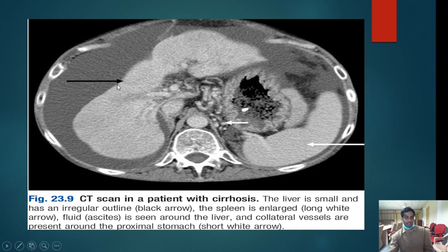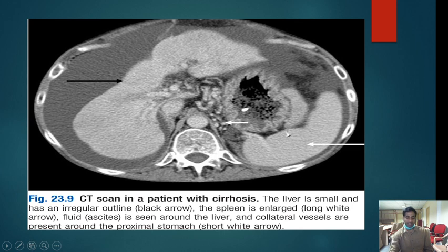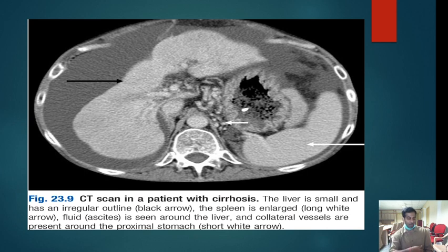On imaging, the liver is shrunken with an irregular outline, and the spleen is enlarged. Collateral vessels are visible on the proximal stomach. The most important clinical finding for portal hypertension is splenomegaly — if the spleen is enlarged, the patient likely has portal hypertension.